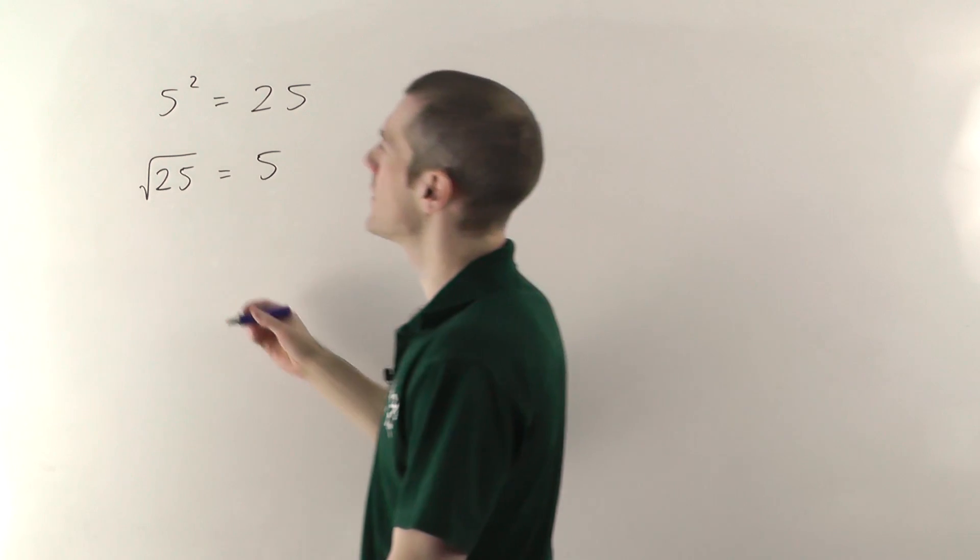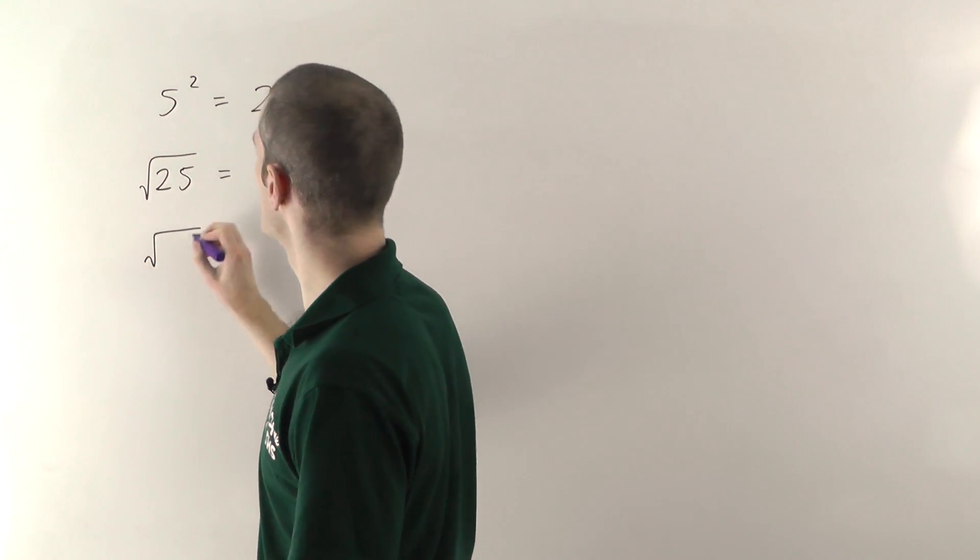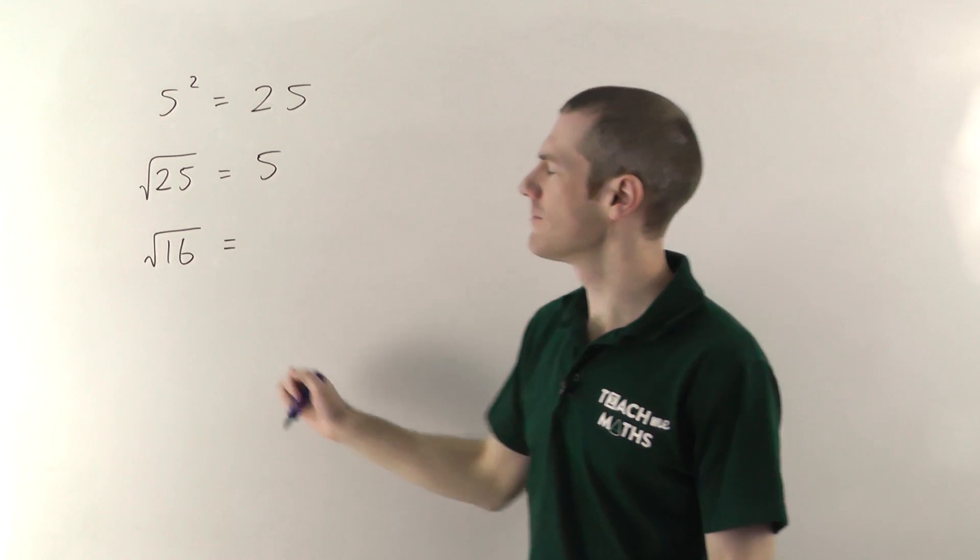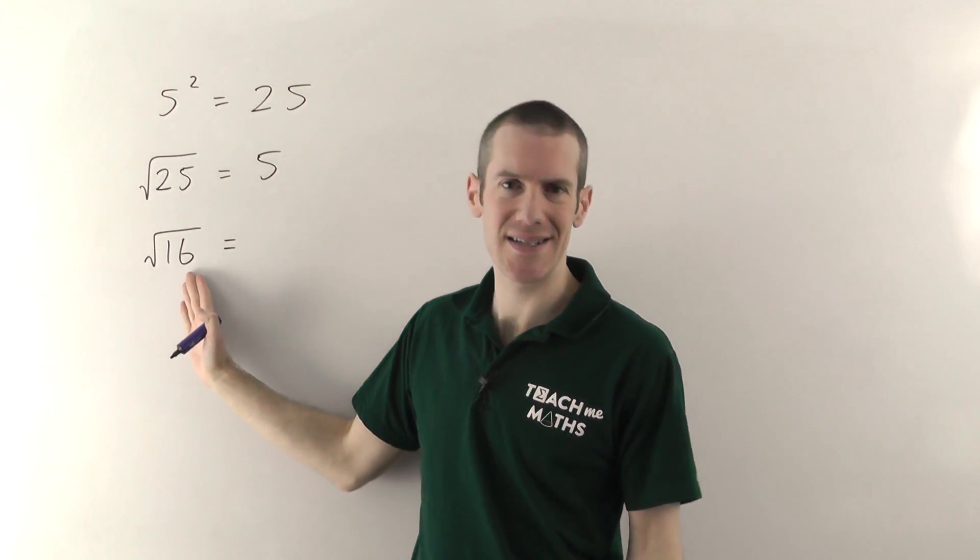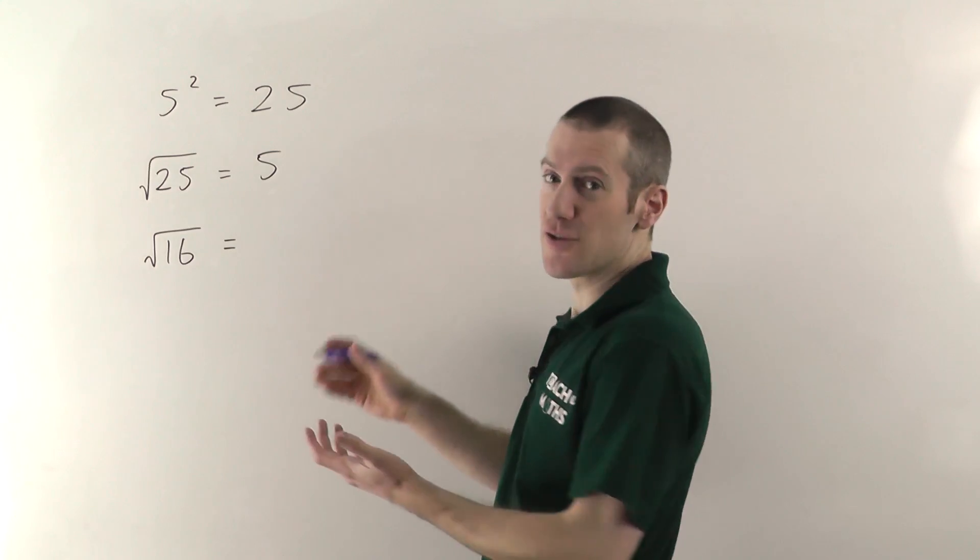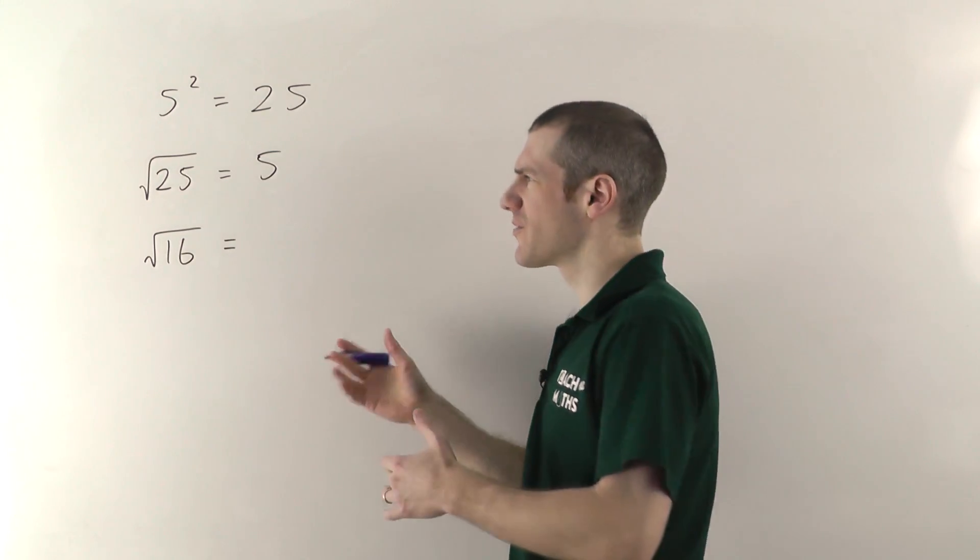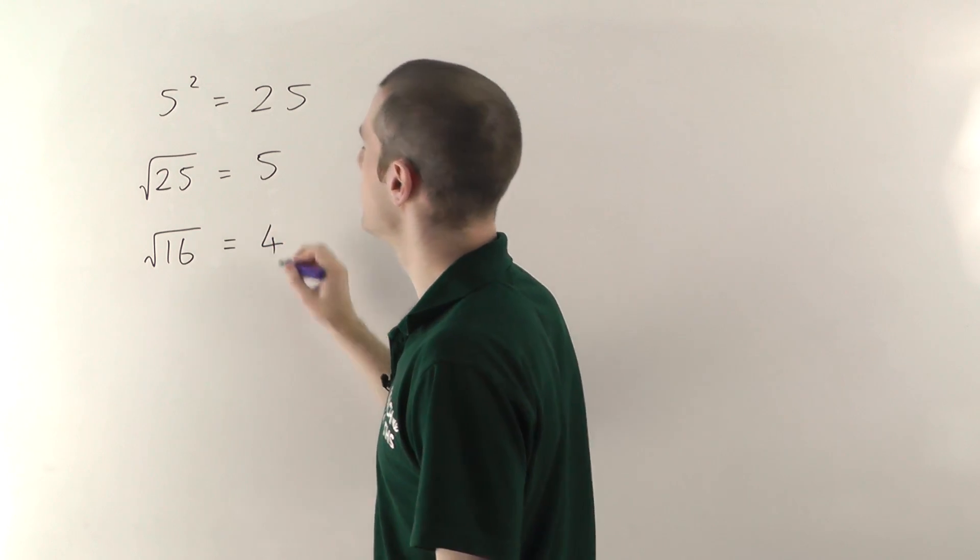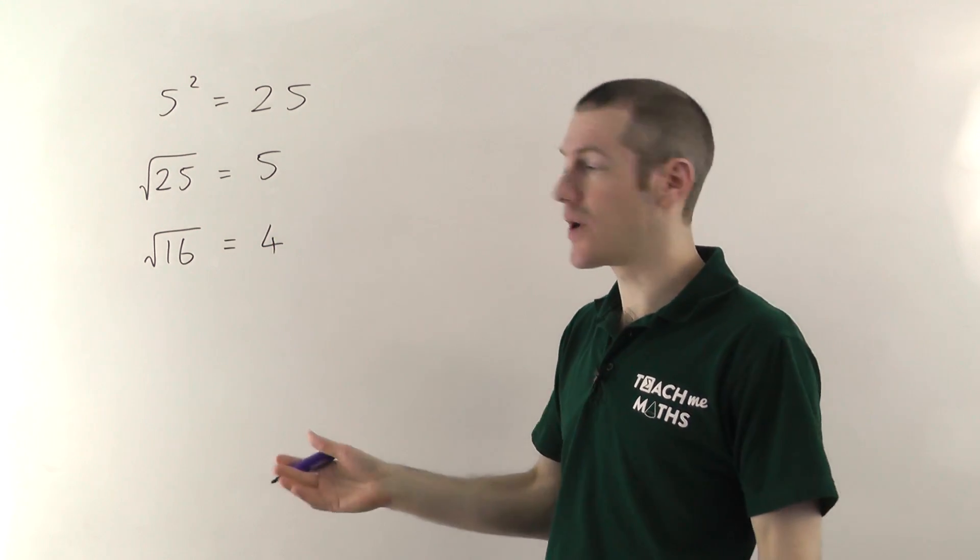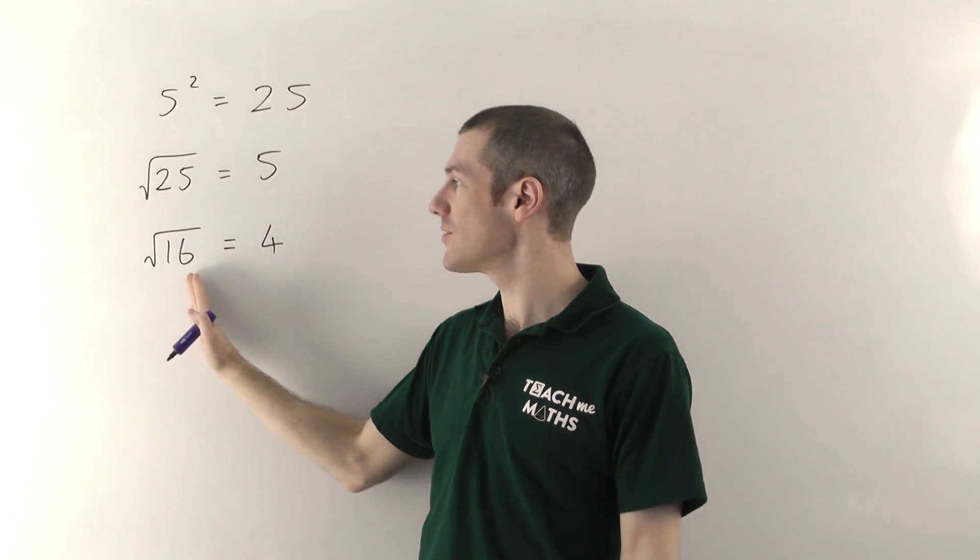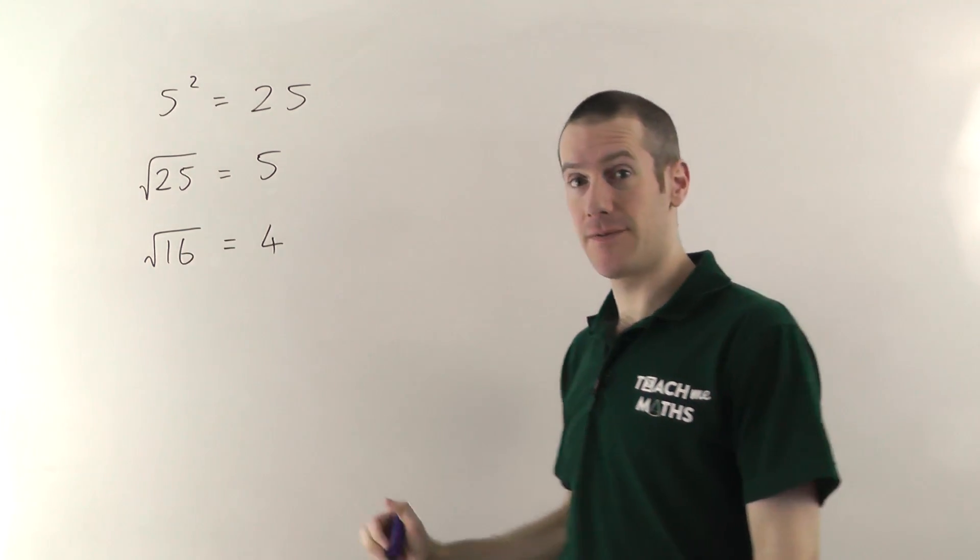Let me do another example then. If you've got the square root of 16 you're saying what number would I have to square to get 16? Well if you think about it you try a few squares, 2² is 4, 3² is 9, 4² is 16. So in this case 4 is the number I would need to square. 4² gives me 16, so the opposite of that, the square root of 16 takes me back to 4.